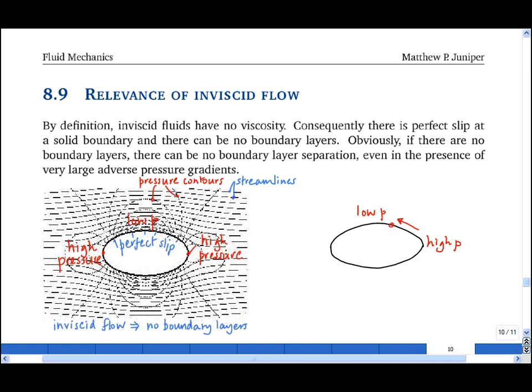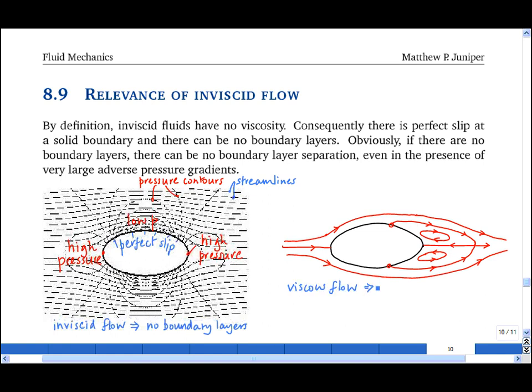So the actual flow looks more like this, with the key difference being that in a viscous flow there are always boundary layers, and boundary layers in an adverse pressure gradient will usually separate, unless the Reynolds number is very low, or the body has a very streamlined shape.